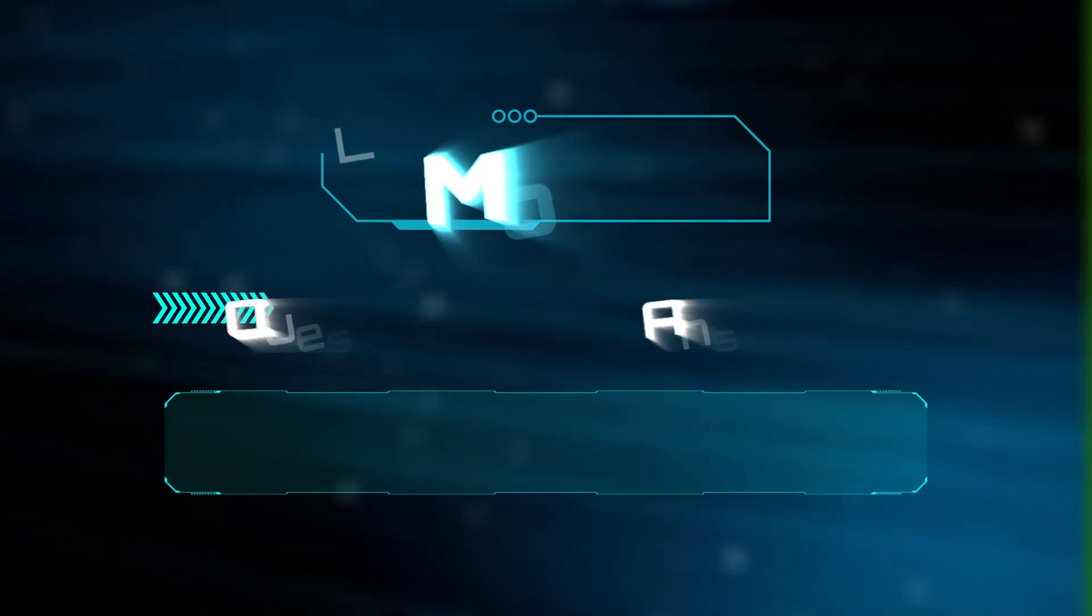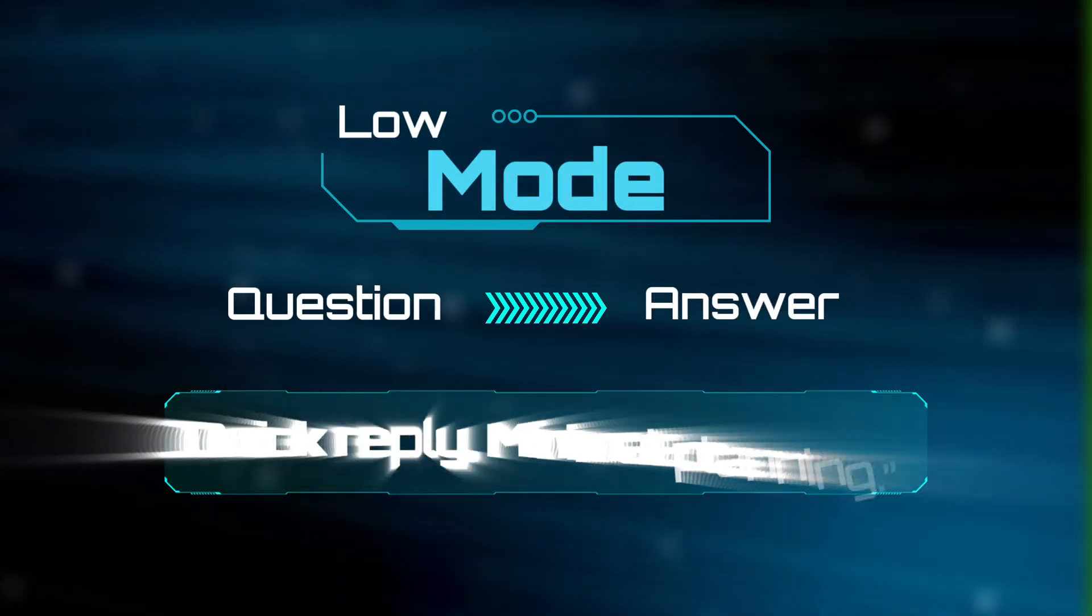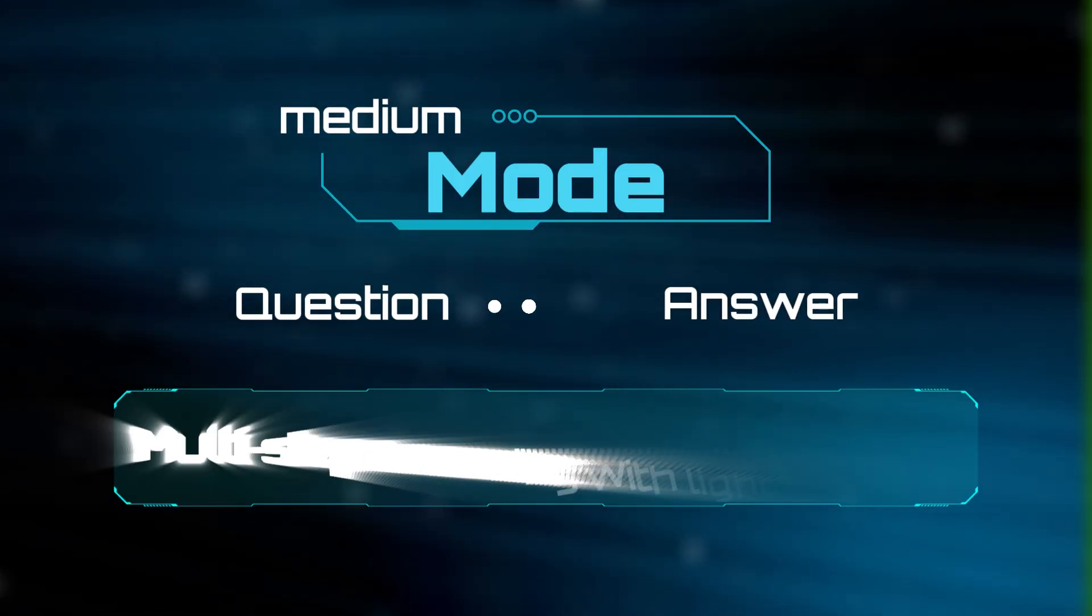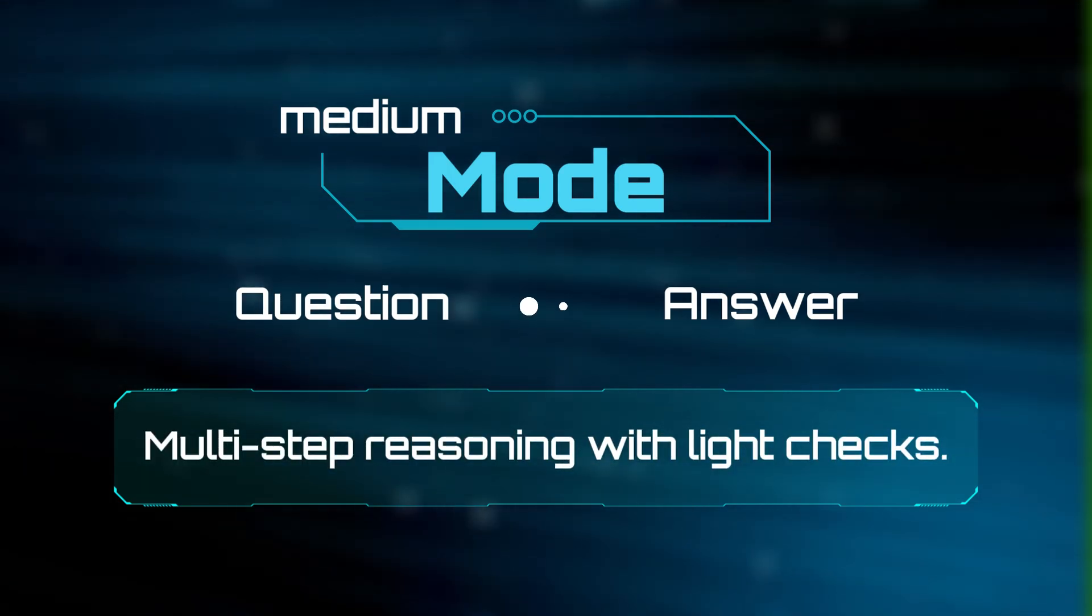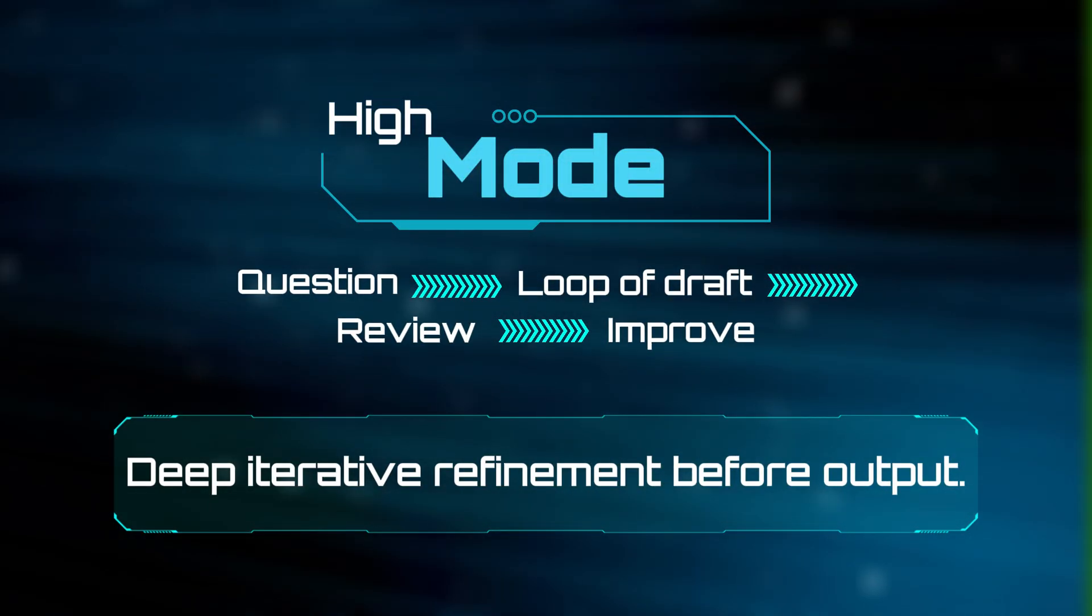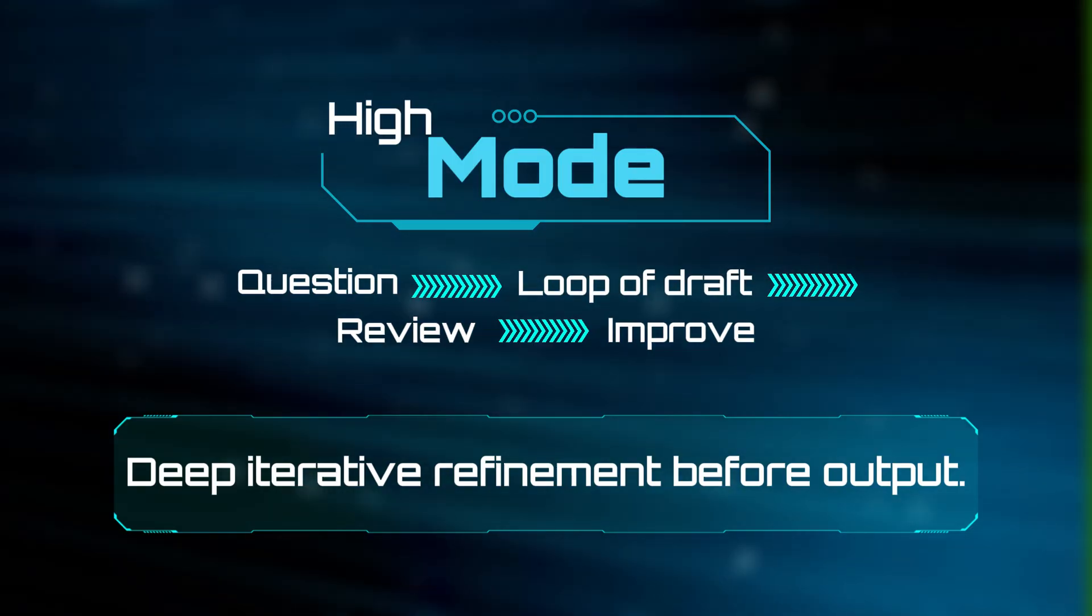A key capability for technical users is reasoning effort control, the ability to set GPT-5's thinking depth for a given query. In low mode, the model truncates multi-step planning to save tokens and latency. In medium mode, it performs standard multi-hop reasoning with light self-critique. In high mode, it engages iterative self-refinement loops where outputs are internally scored, revised, and rescored before emission.